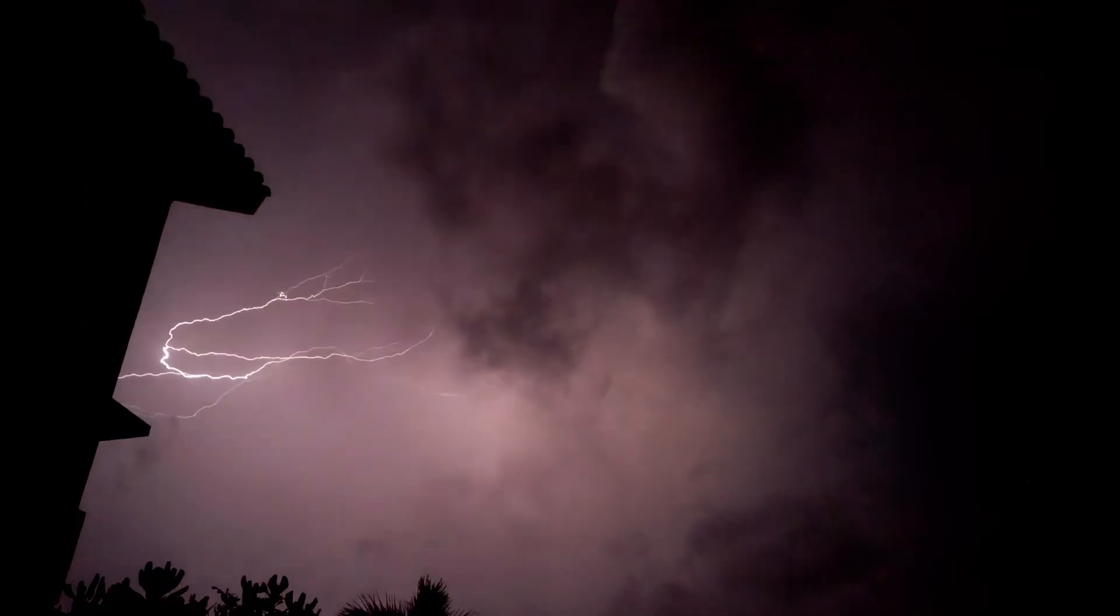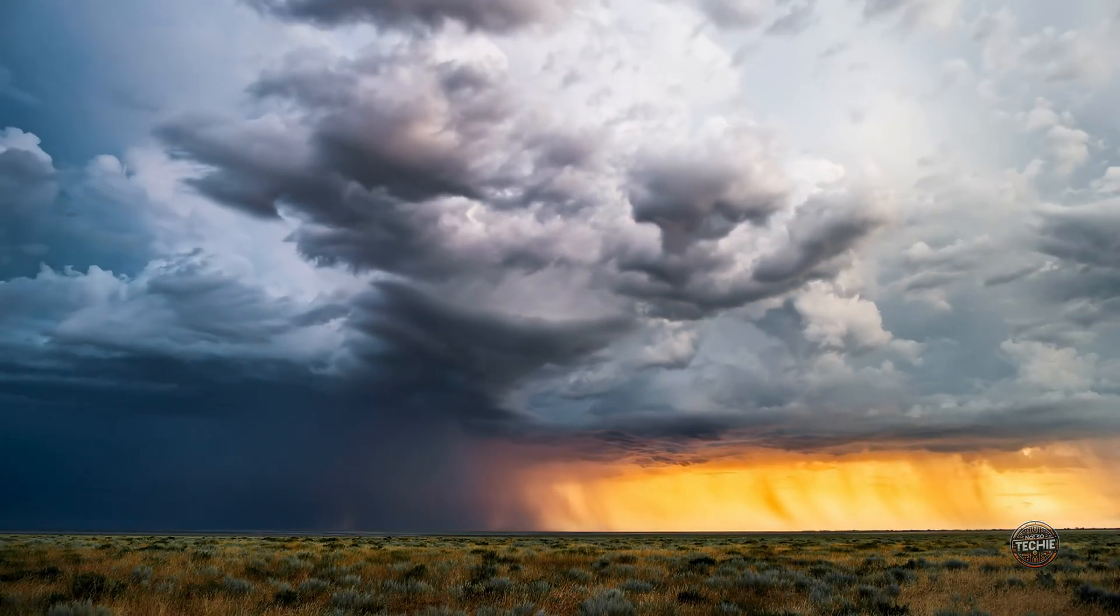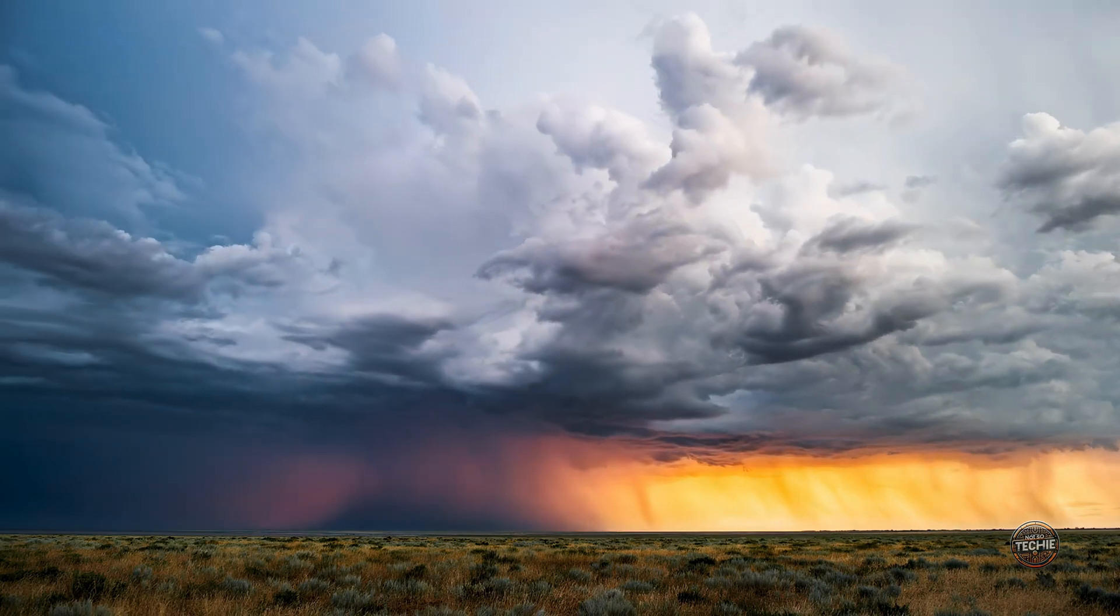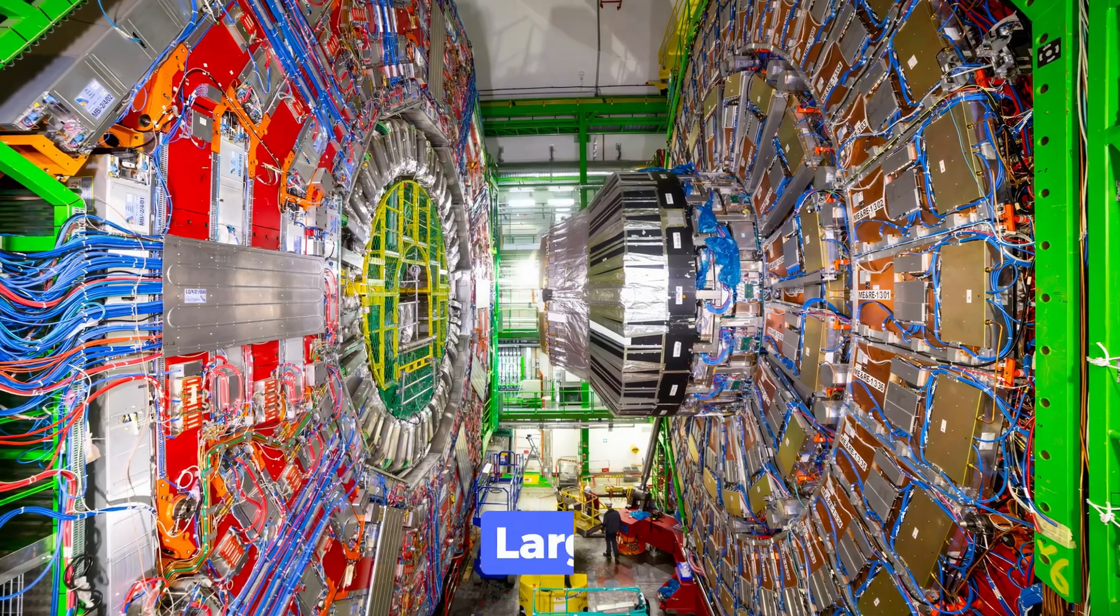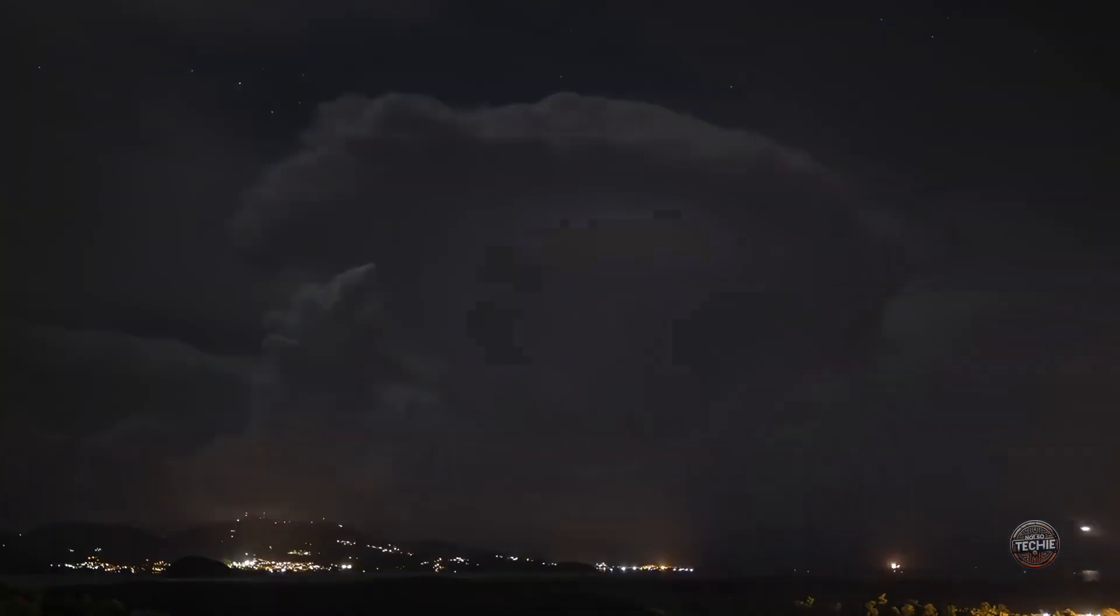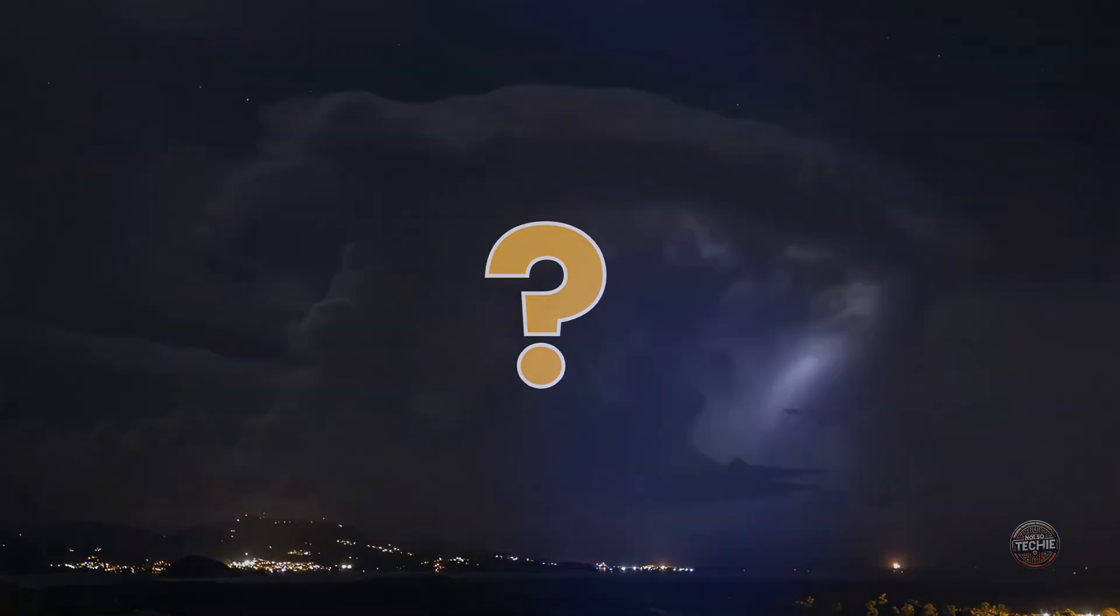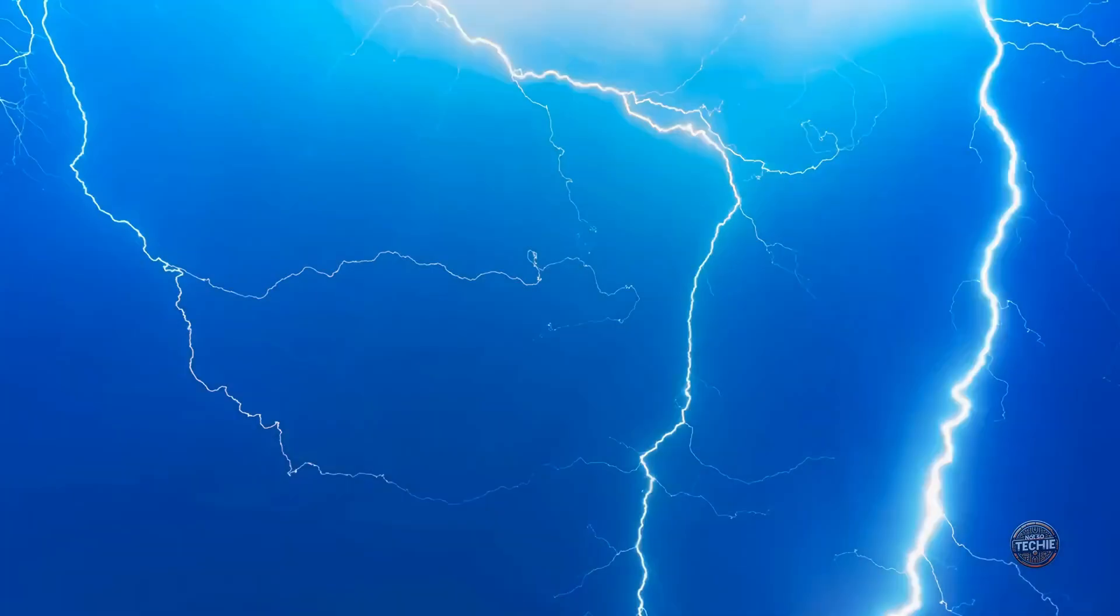And yet, they're also produced right here on Earth within thunderstorms. The discovery of gamma rays in thunderstorms has transformed how we view these weather phenomena. Far from being simple meteorological events, thunderstorms are natural particle accelerators capable of producing energies that rival those created in human-made systems like the Large Hadron Collider. But why does this happen? How are gamma rays generated in thunderstorms? And what implications do they have for science, technology, and humanity?